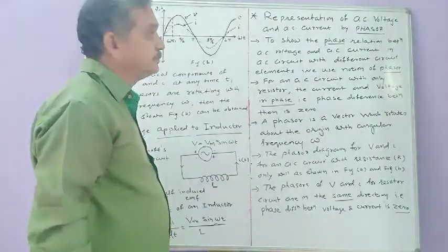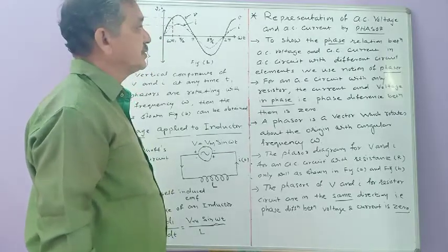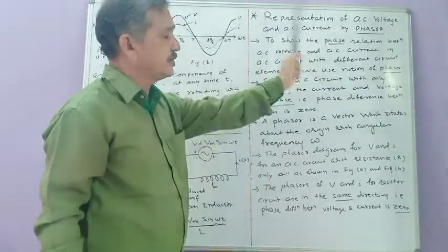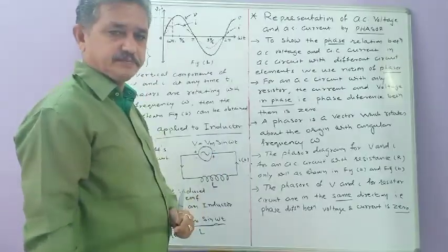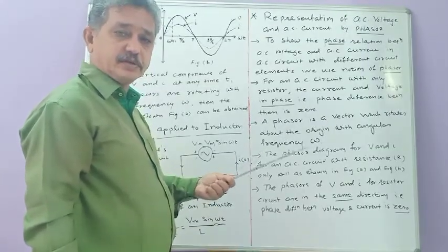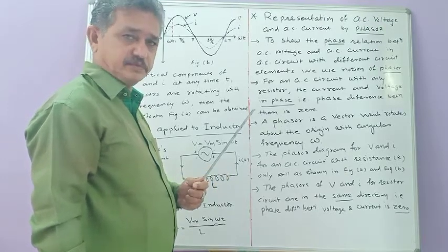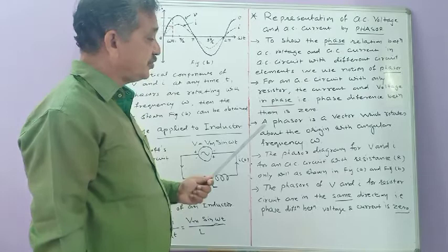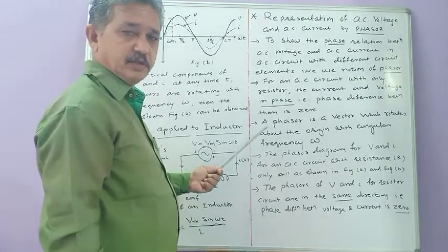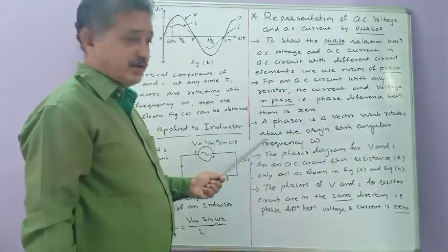Let us see the next topic of Chapter 7: representation of AC voltage and AC current by phasor method — how AC voltage and AC current can be represented by phasor. A phasor is nothing but a vector — a vector of voltage or vector of current.